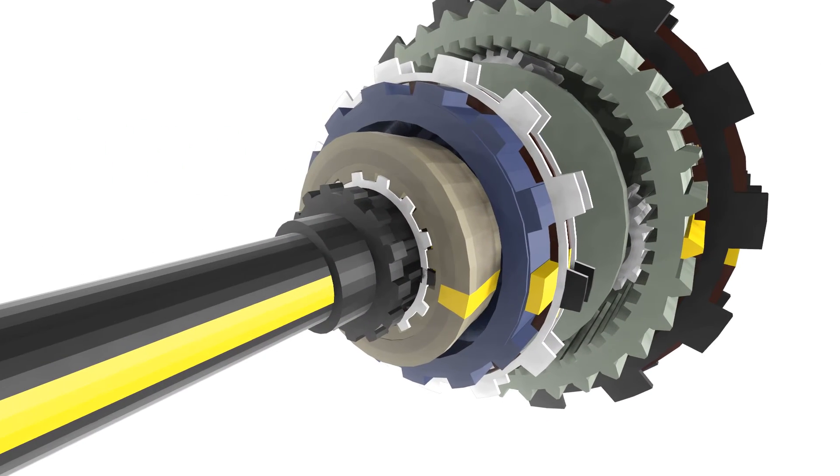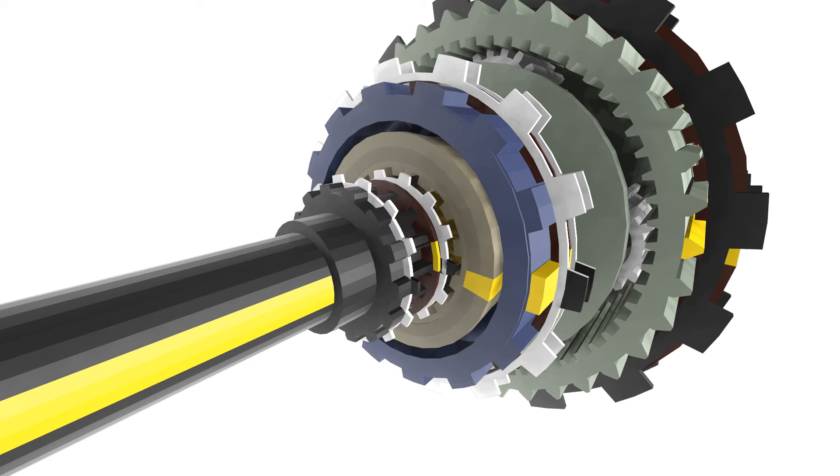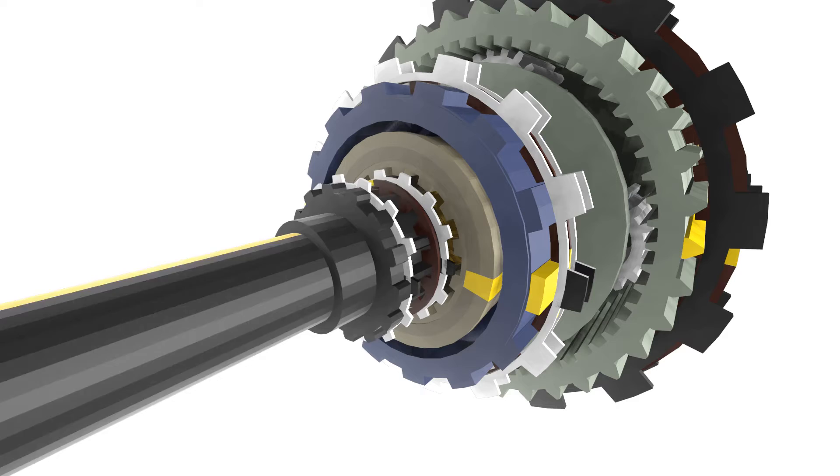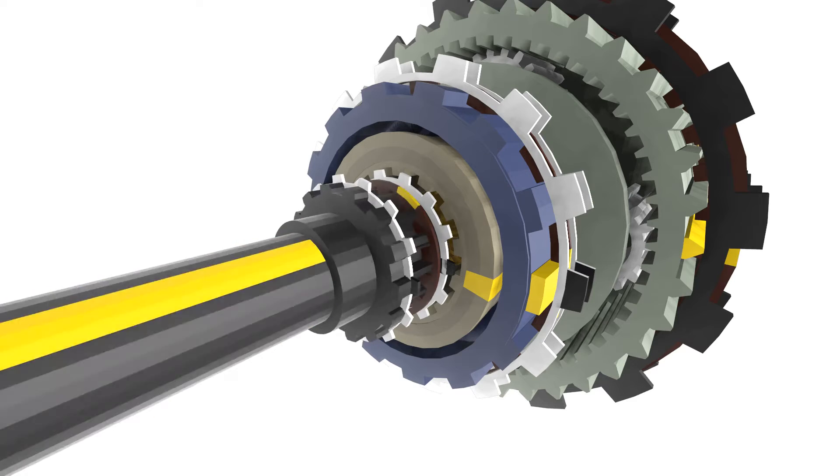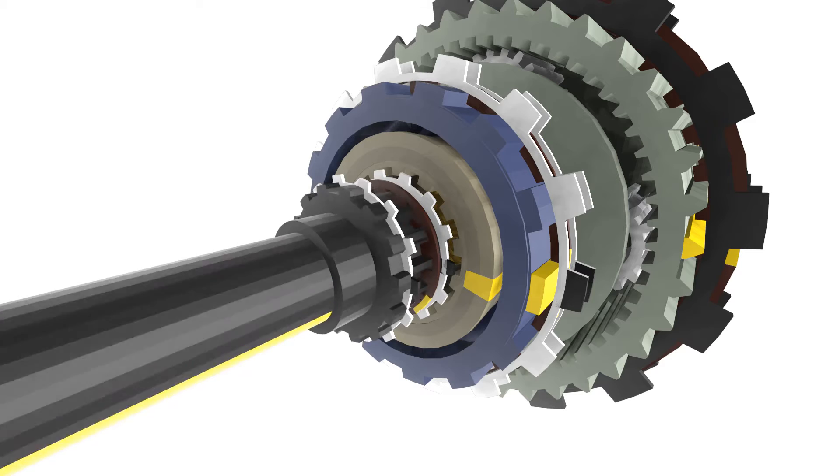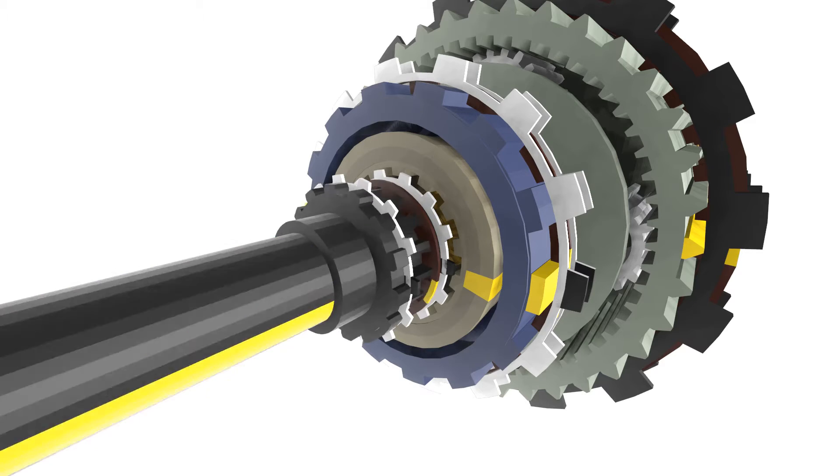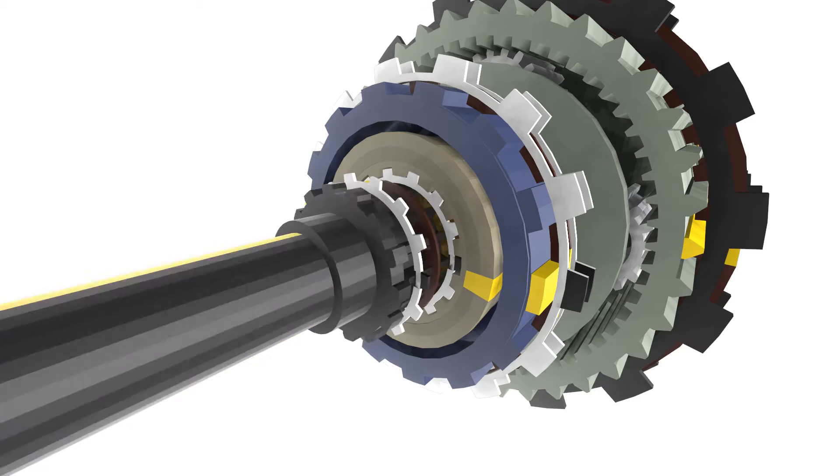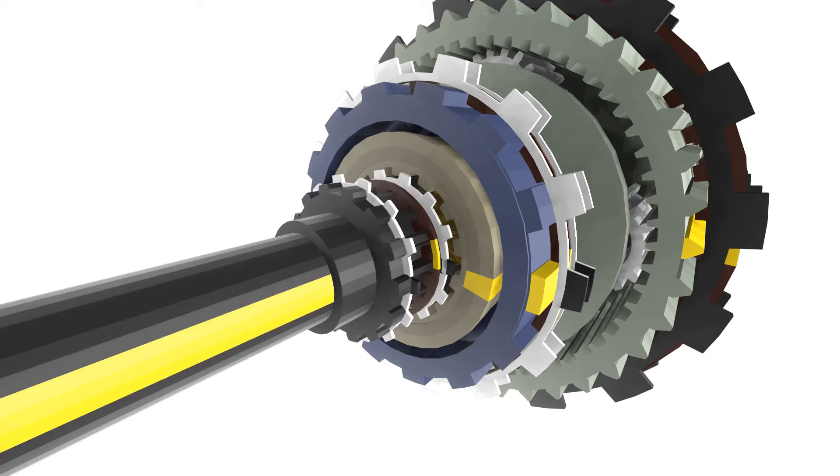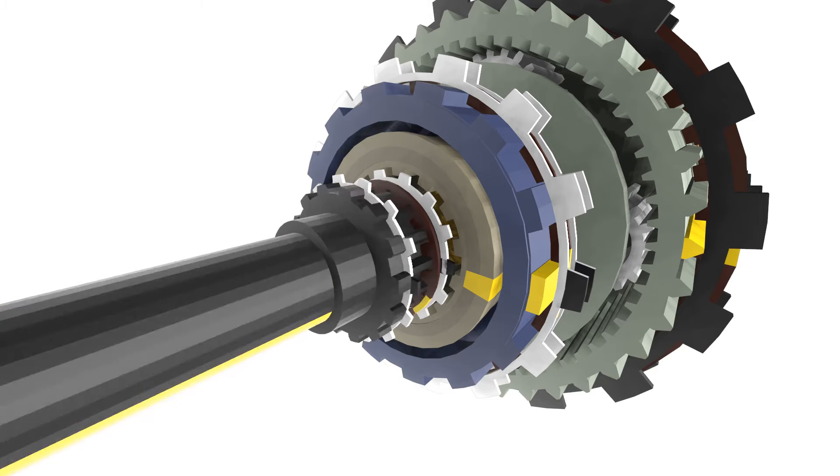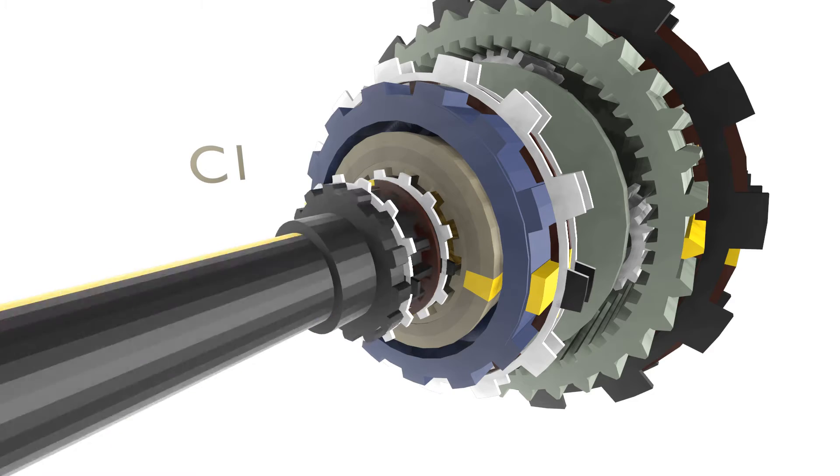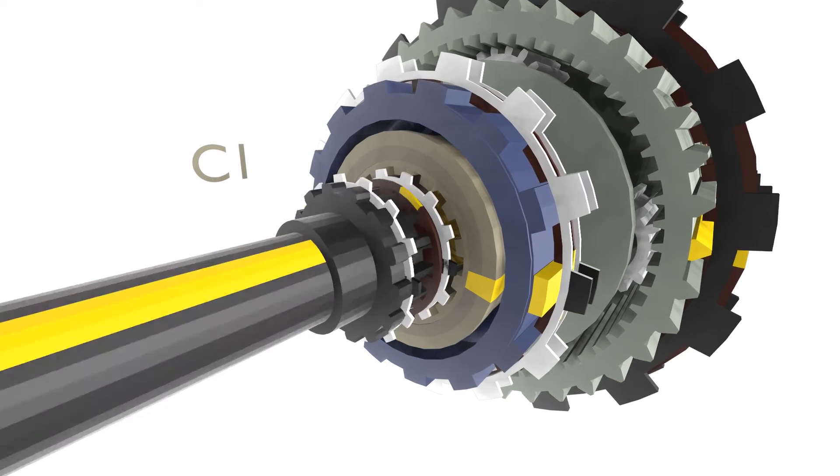As you can see, the red clutch disc is splined to the input shaft. It can rotate freely with the input shaft. The silver discs are steel plates that are locked to the clutch housing. These will never rotate. We can see here that the C1 housing at this point is not rotating with the input shaft. The C1 clutch housing and the input shaft must rotate together to shift into gear one.